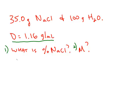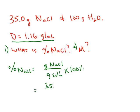The percent of sodium chloride, if you follow the definition, percent sodium chloride would be grams of sodium chloride divided by grams of the solution times 100%. The grams of sodium chloride is given as 35.